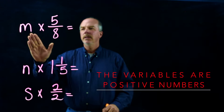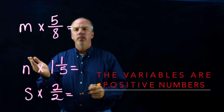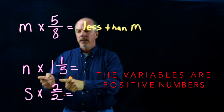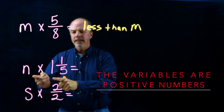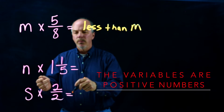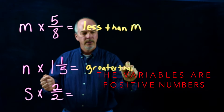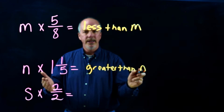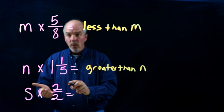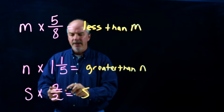In this example, we're looking at m, and we want to know what happens to m when we multiply it by 5 eighths. 5 eighths is less than 1, so our product will be less than m. Let's look at this one: the variable n times 1 and 1 fifth. 1 and 1 fifth is greater than 1, so our product will be greater than n. And this last example: the variable s times 2 over 2, which is 1, so our product will simply equal s. Anything times 1 is itself.